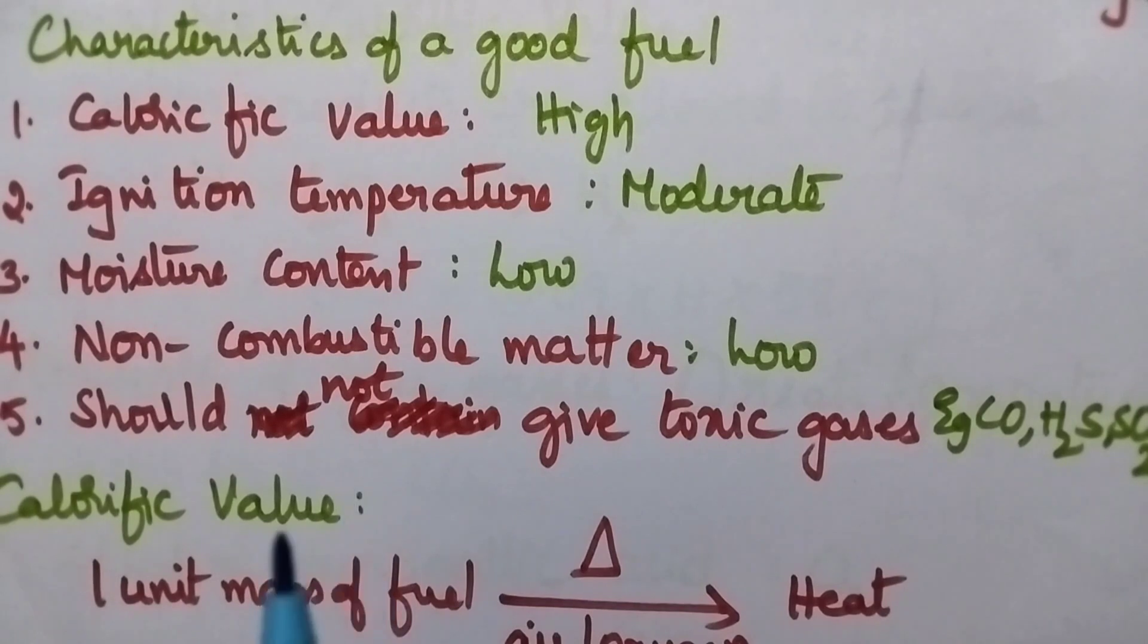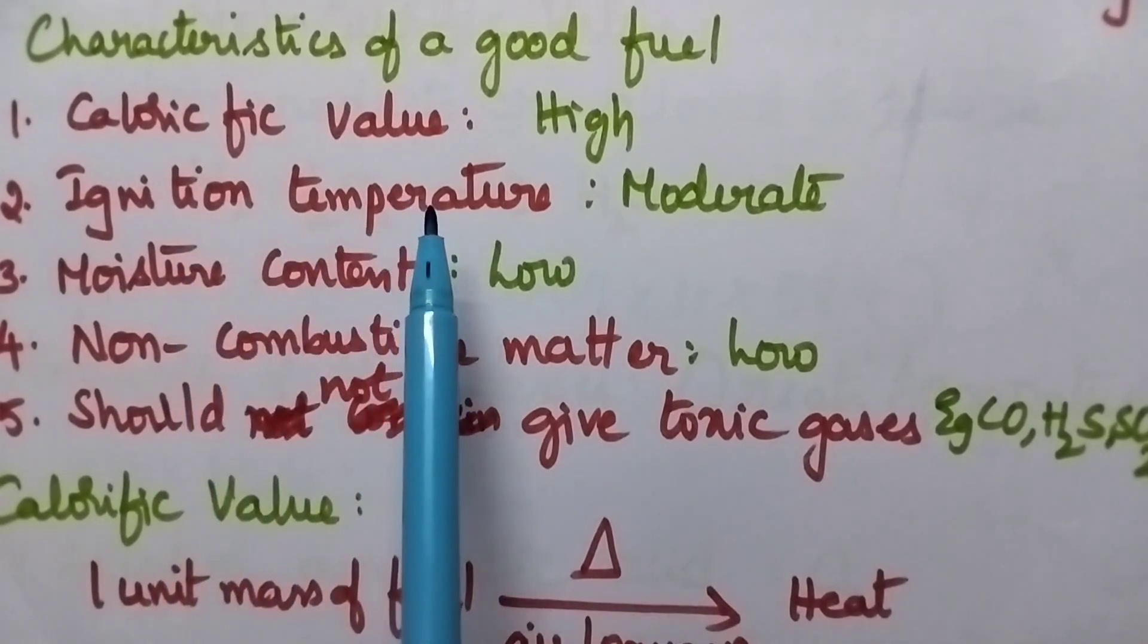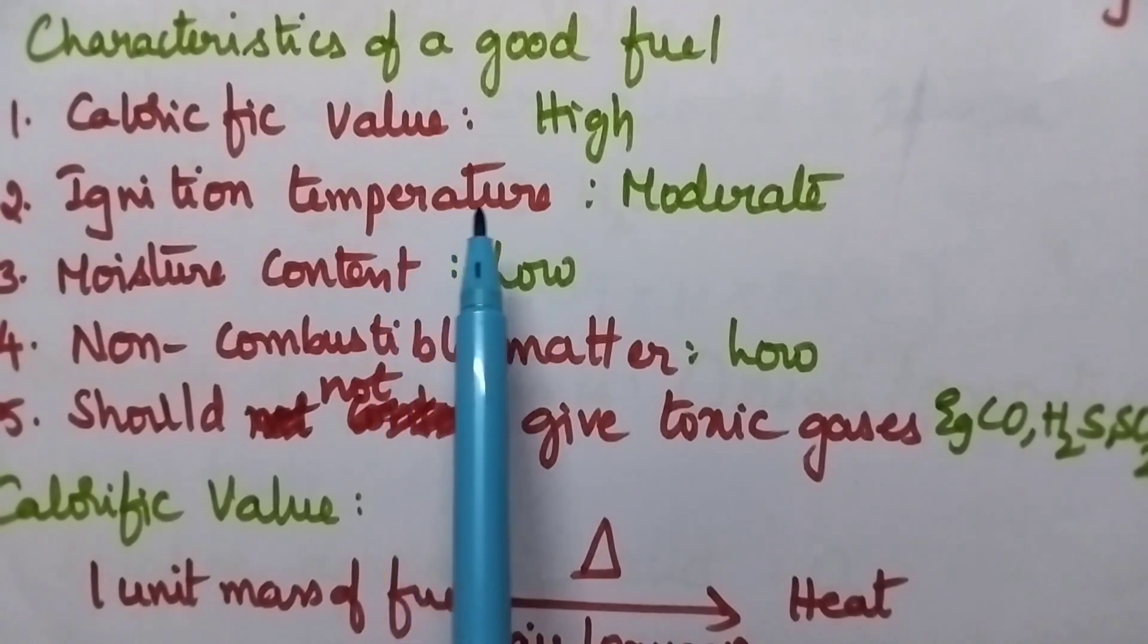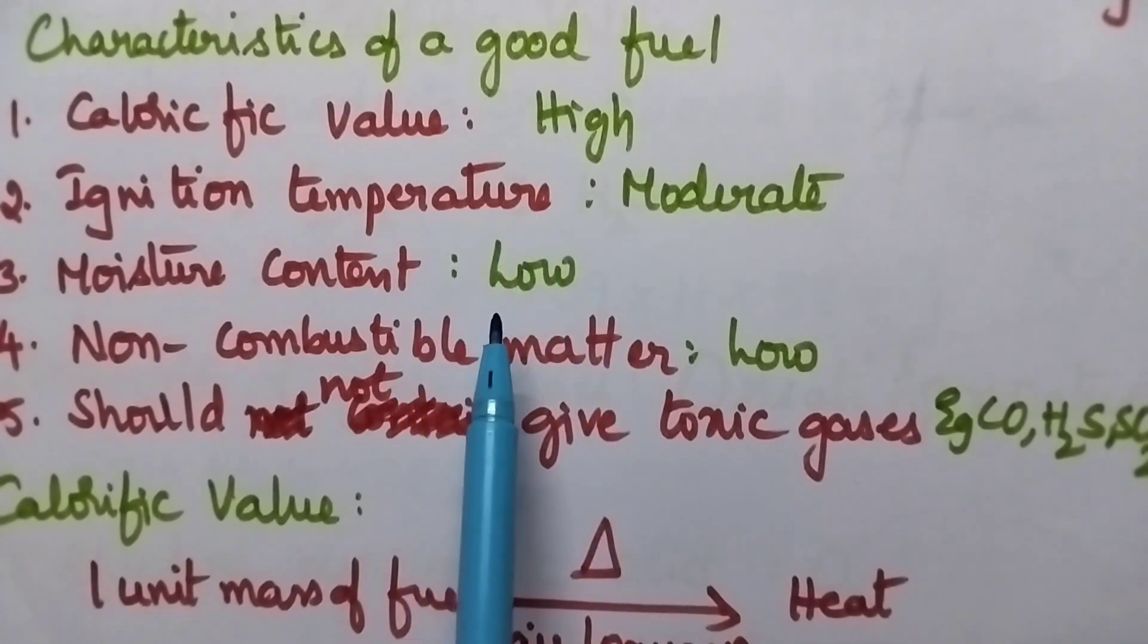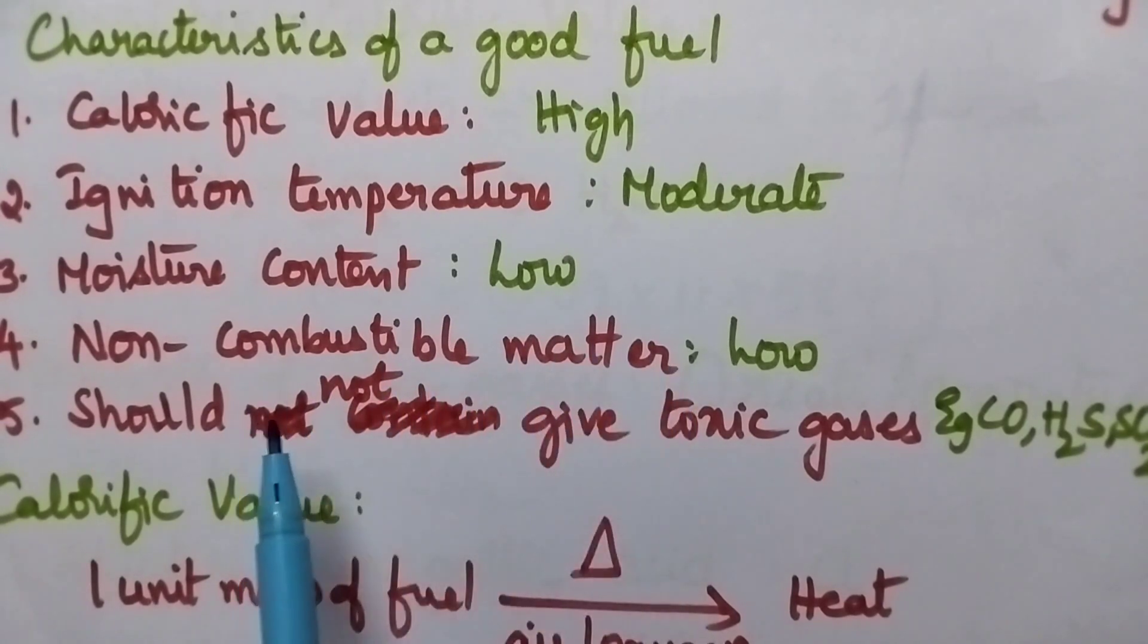For the selection of good fuel, one must know what are the characteristics of a good fuel. The efficiency of the fuel is measured in terms of calorific value. Always a good fuel is supposed to have high calorific value, whereas ignition temperature should be moderate. It must contain only low moisture content. Non-combustible matter should be low and it should not give any toxic gases on combustion. So CO, H2S, SO2 are the toxic gases. A good fuel is not supposed to release these gases.